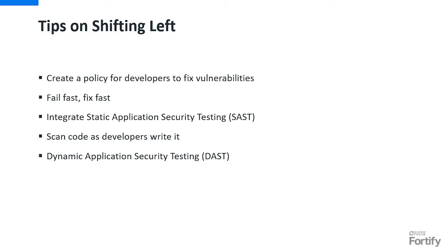A common way of shifting left is embedding static application security testing within the CI/CD pipeline. Static scans focus on finding security weaknesses in the code itself. Many conduct static scans on nightly builds for code committed during the day and integrate SAST — static application security testing — with the build or CI server. You can also enable developers to scan code as they write it, receiving instant feedback on issues. Dynamic security scans look for vulnerabilities in real time while the application is running, and are usually used later in the lifecycle. However, we're starting to see a shift of dynamic application security testing left as well — that's starting to be a trend.